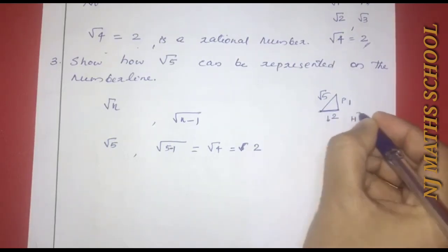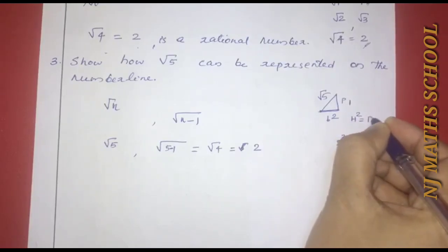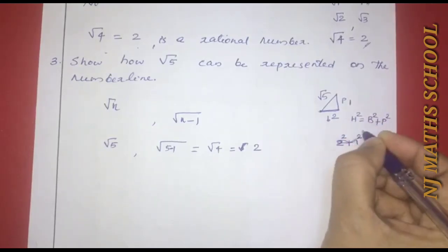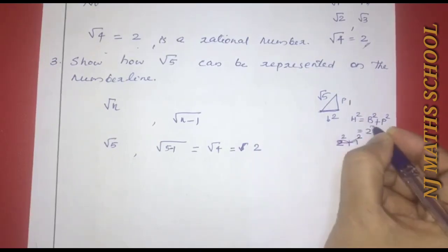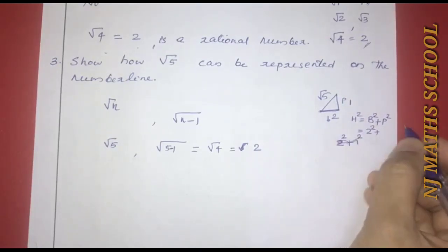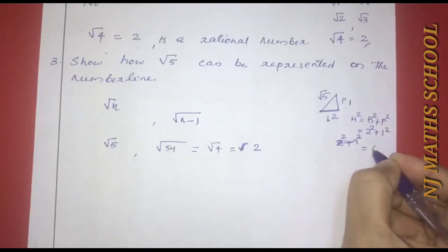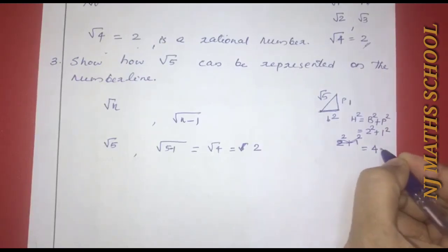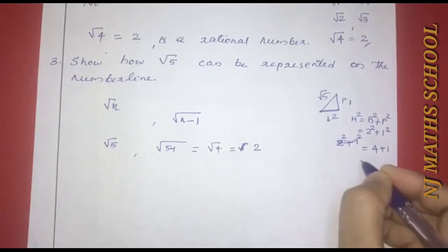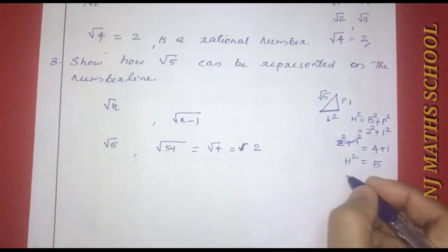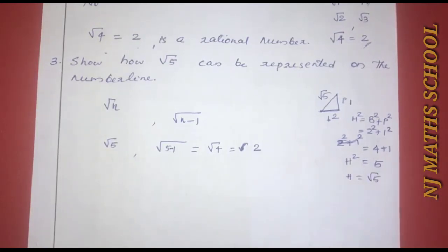Applying h² = b² + p²: with base b = 2 and perpendicular p = 1, we get h² = 2² + 1² = 4 + 1 = 5. Therefore h² = 5, which means h = √5.